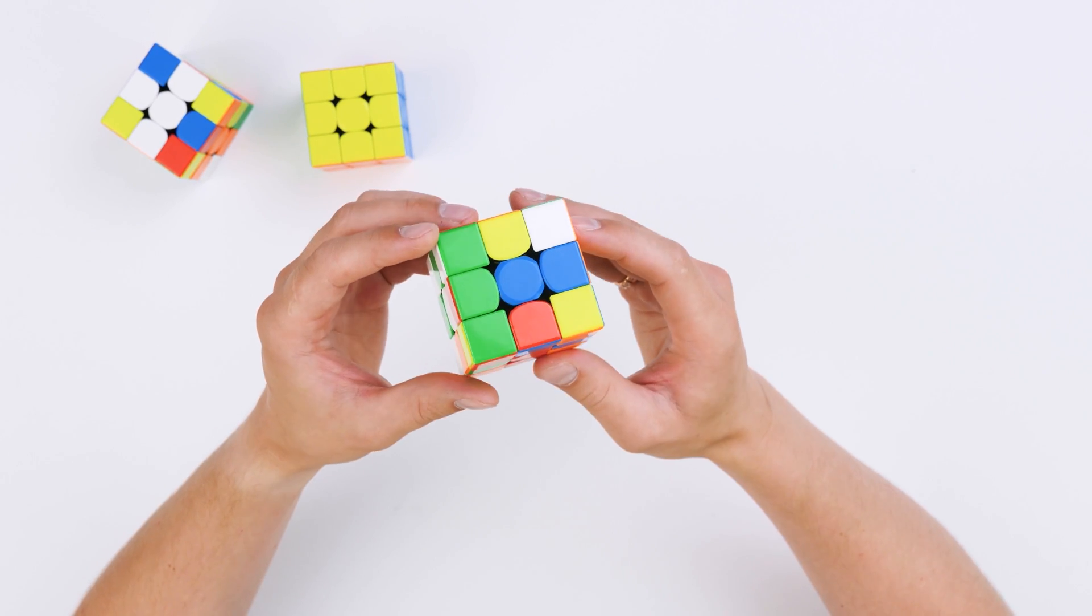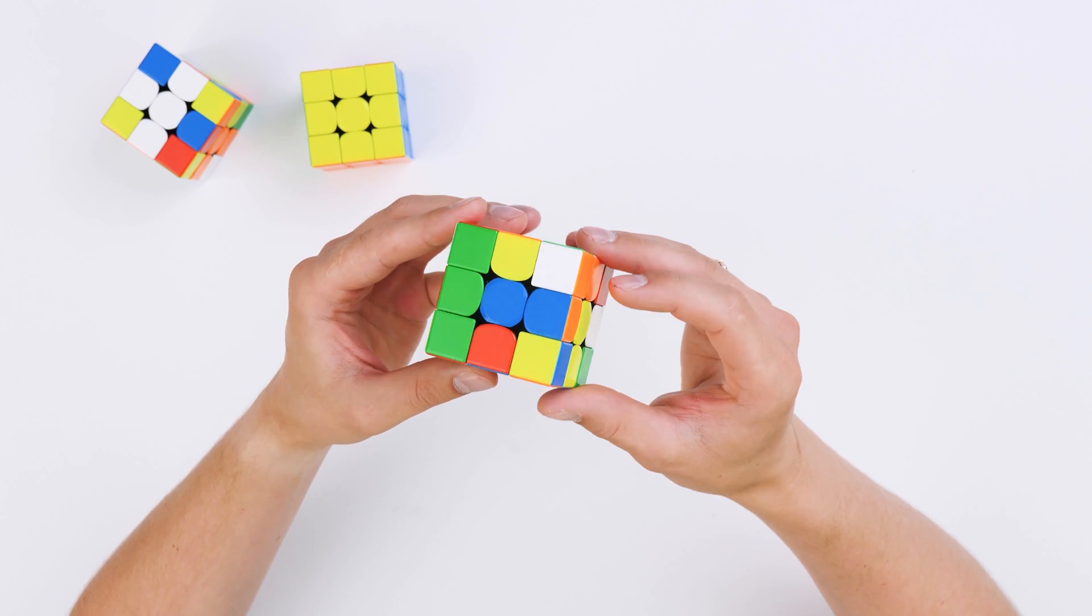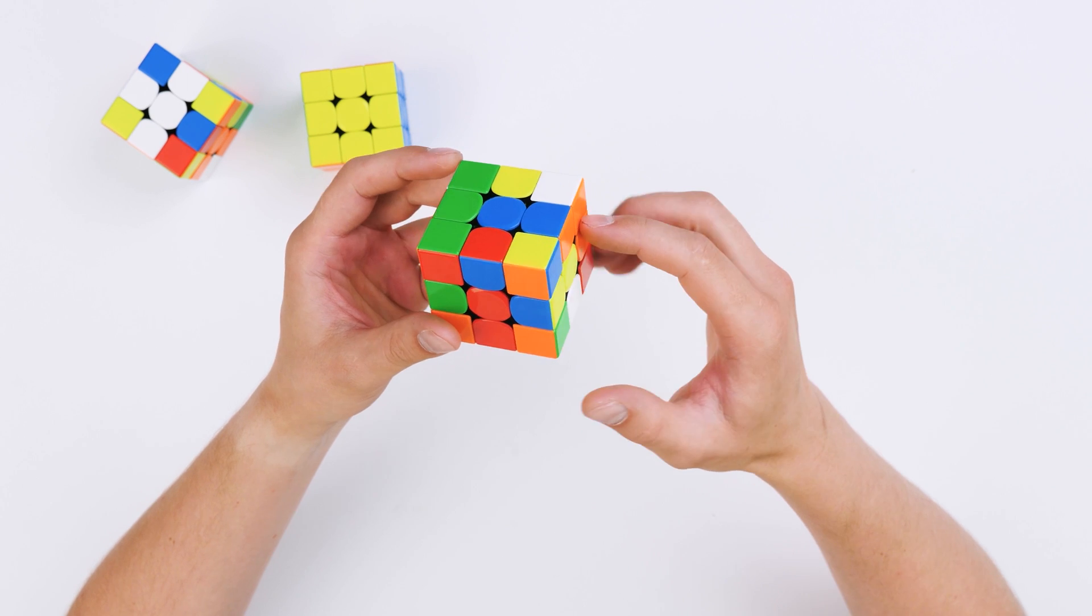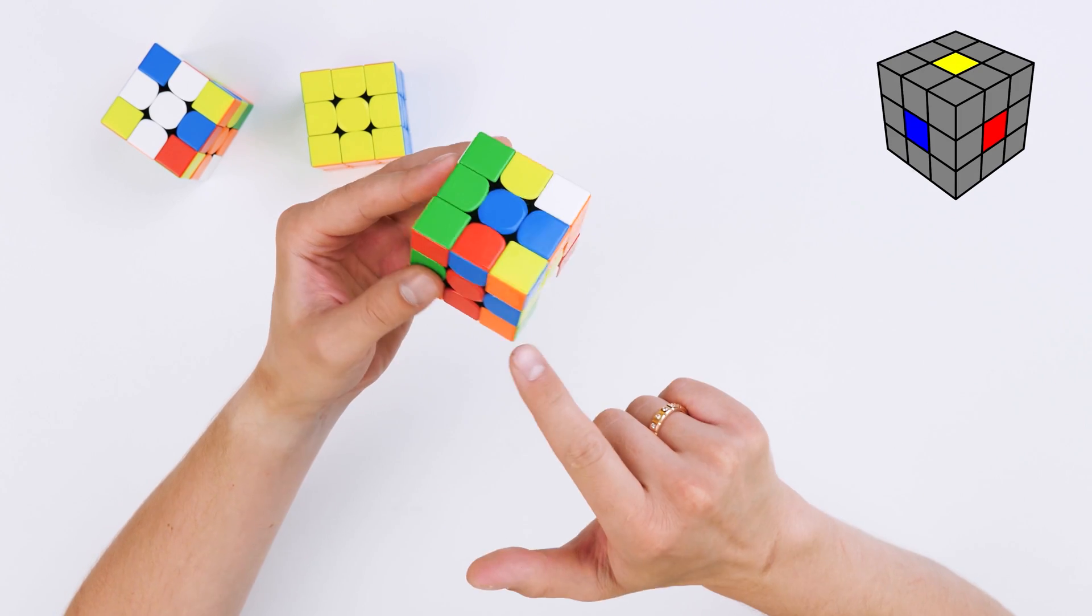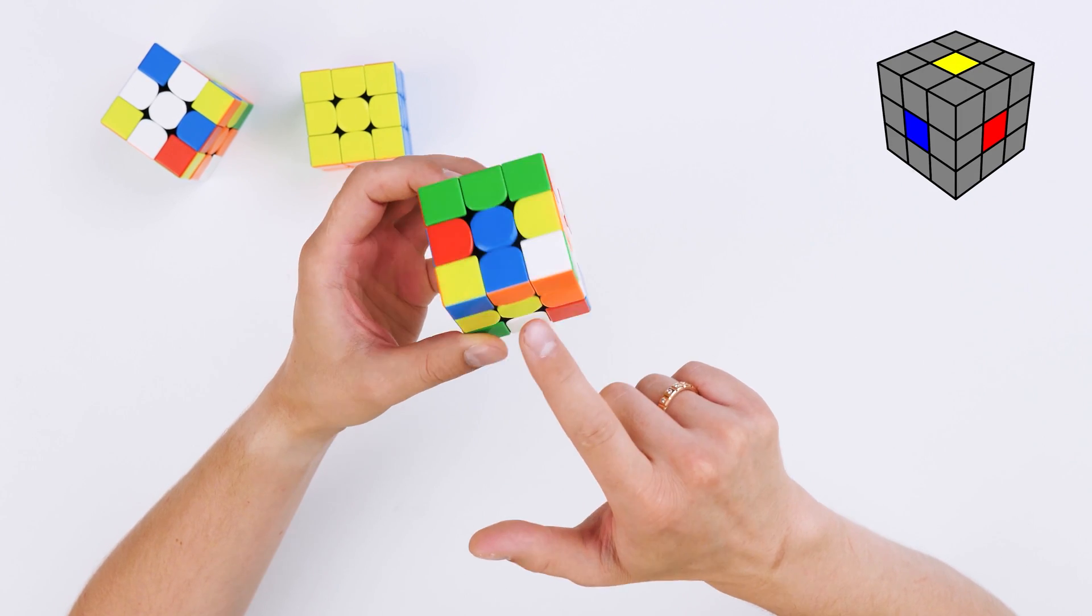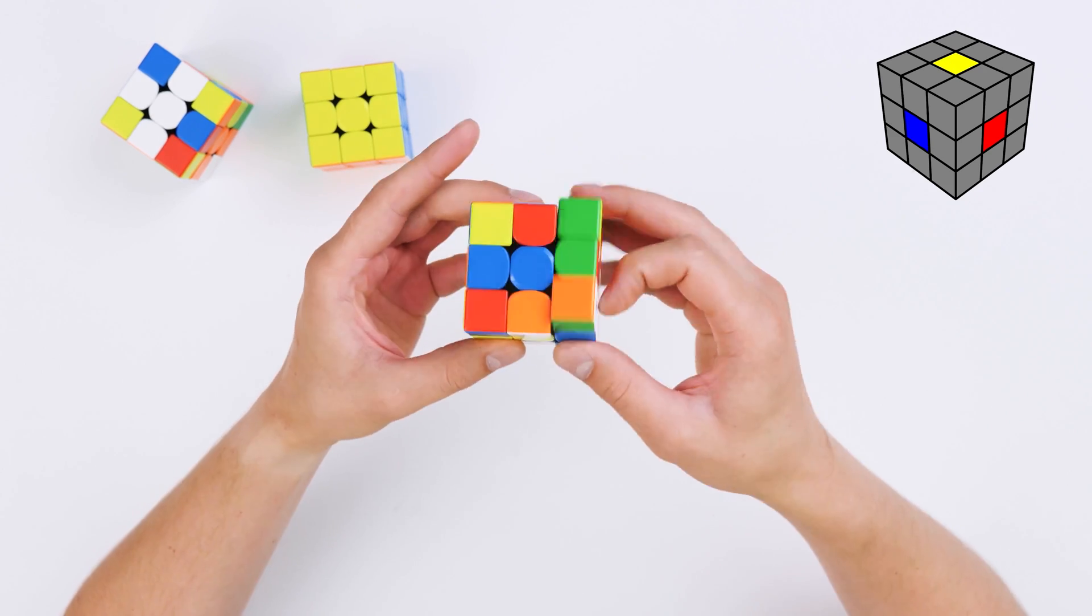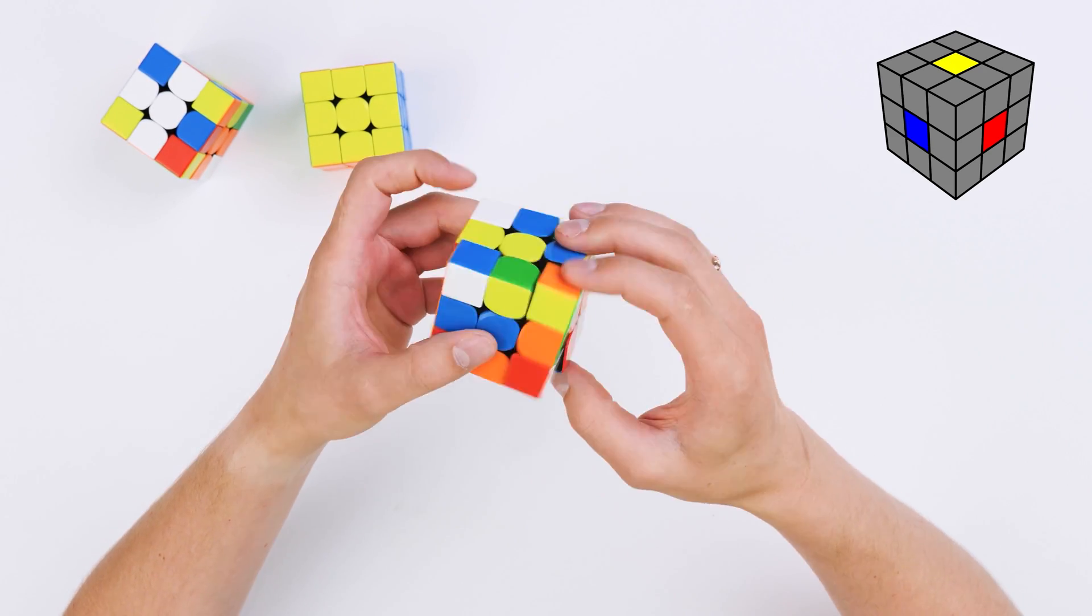To begin, let's look at this puzzle. The cube consists of parts of several types. The centers, there are six of them, they are in the middle of each side. The point is that no matter what sides we turn, the position of the centers remains still.